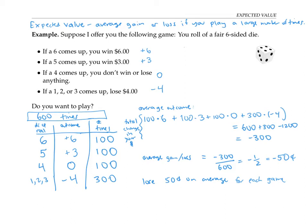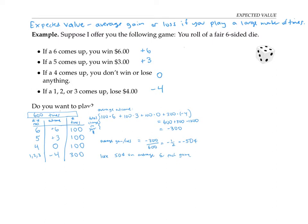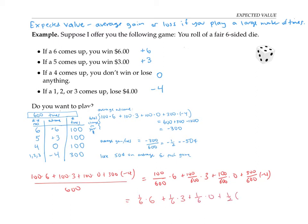Let me repeat this calculation in a slightly different way. When I found the average outcome, I added up the money and divided by the number of games of 600. But I could have done this also by dividing each term in my sum by 600 separately. So 100 over 600 times six, plus 100 over 600 times three, plus 100 over 600 times zero, plus 300 over 600 times negative four. The arithmetic works out the same. But simplifying some of those fractions, that's a sixth times six, plus a sixth times three, plus a sixth times zero plus a half times negative four.